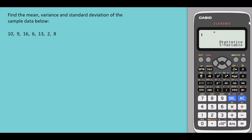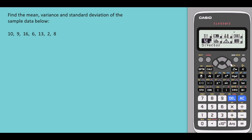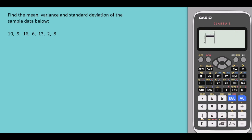Once done, go to Menu and scroll until you find Statistics, which is option six. Select one for one variable, and now we can input the data.